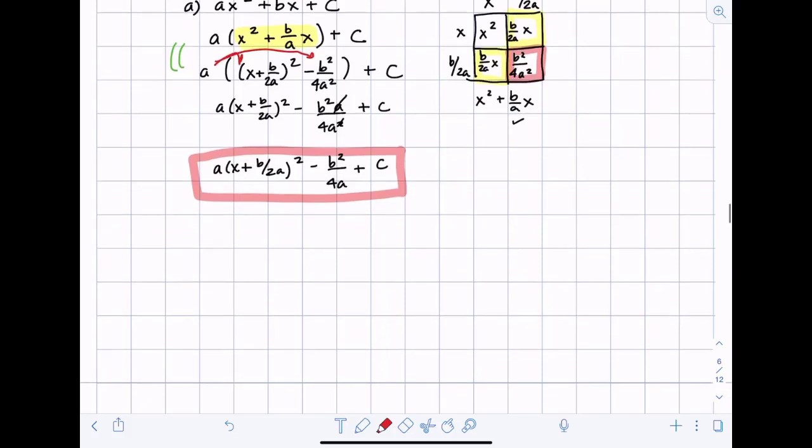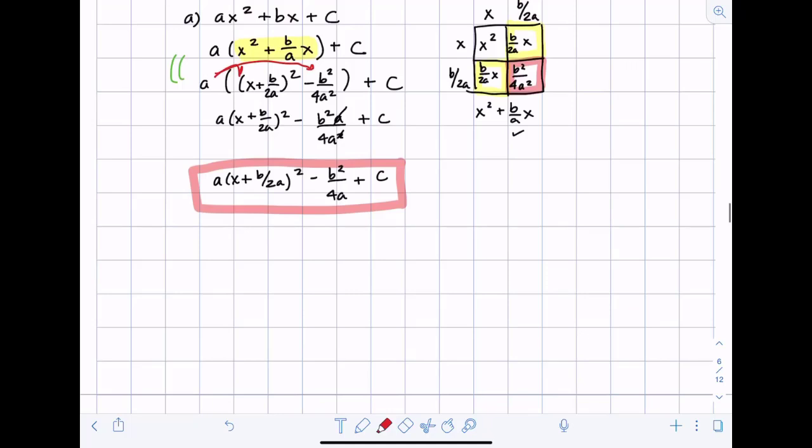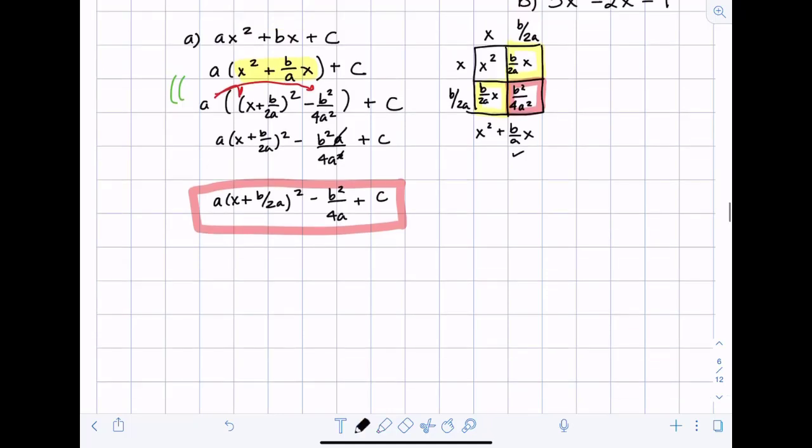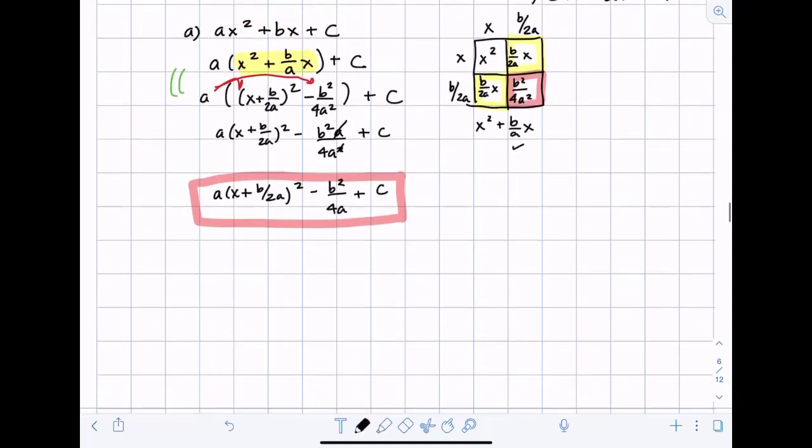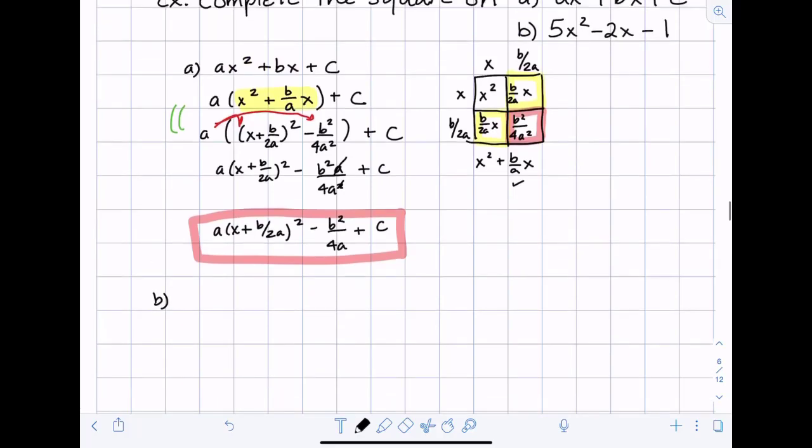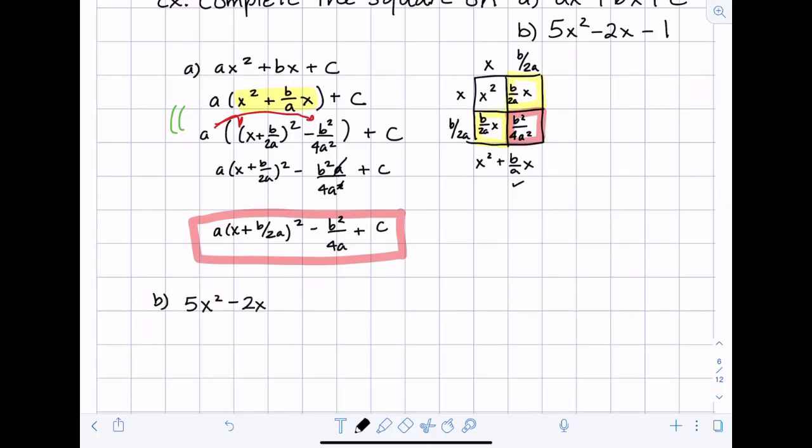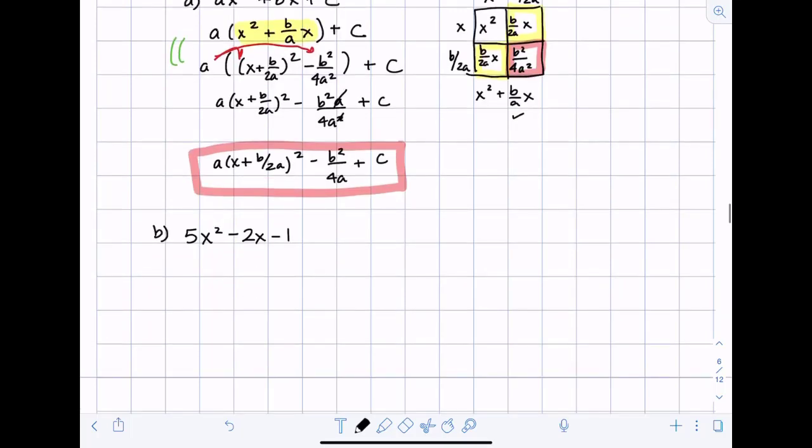Okay so we just completed the square on basically any quadratic. Let's take a look at doing this with a specific example with some numbers so we'll take a look at b and just go over that process again with some specific values. 5x squared minus 2x minus 1. So I begin the process by factoring out my leading term from the first two terms.